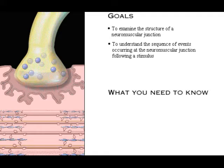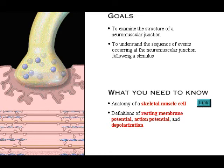Here's what you need to know: the anatomy of a skeletal muscle cell, and definitions of resting membrane potential, action potential, and depolarization. To review the anatomy of a skeletal muscle cell, click the link button. You can return to the page you started from by clicking the return button. To see definitions of terms, click the bold red words.